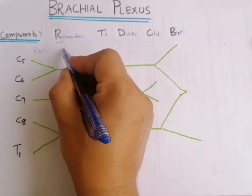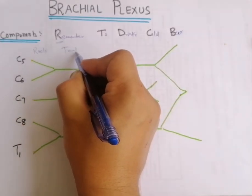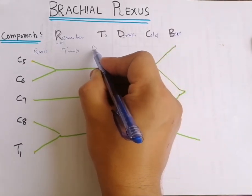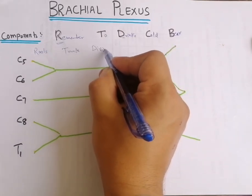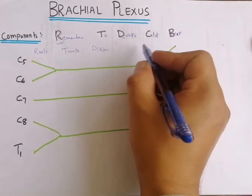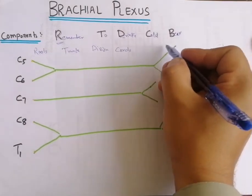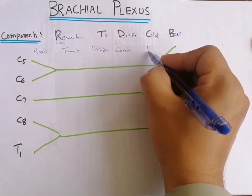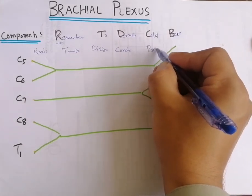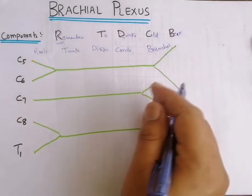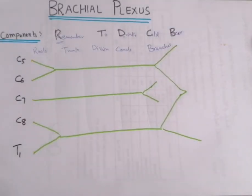T is for Trunks, D is for Divisions, C is for Cords, and B is for terminal Branches. These are the five components of the brachial plexus.